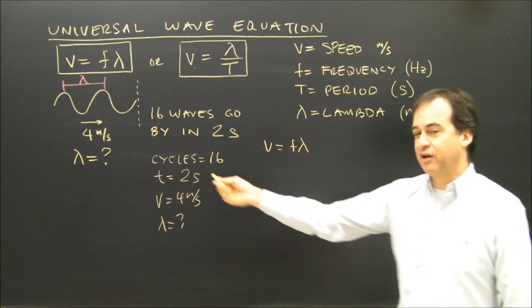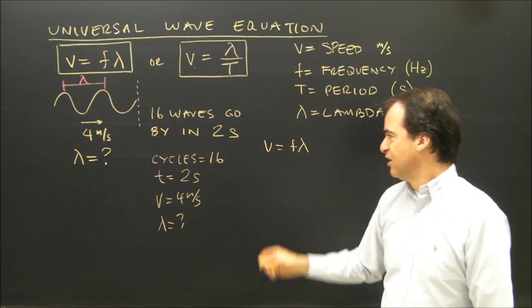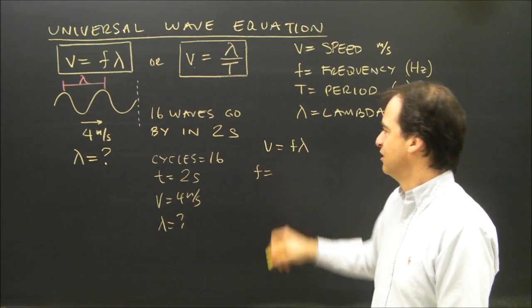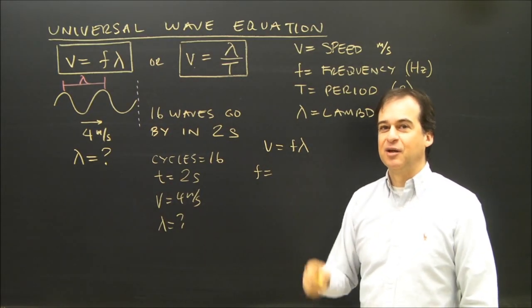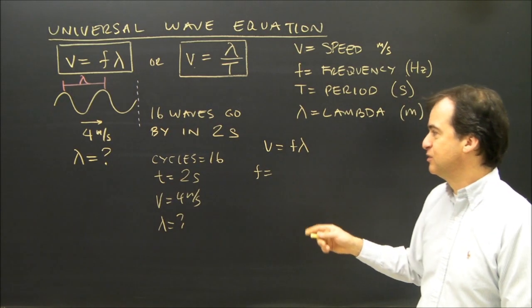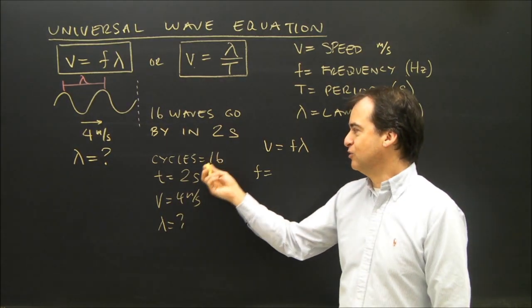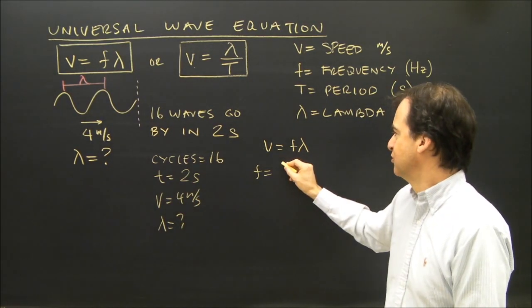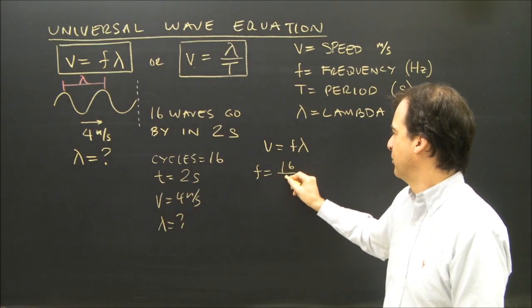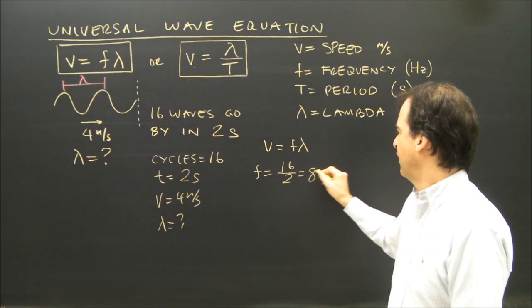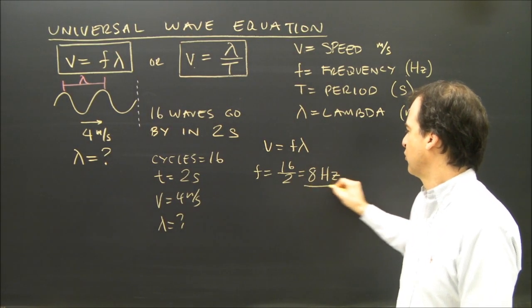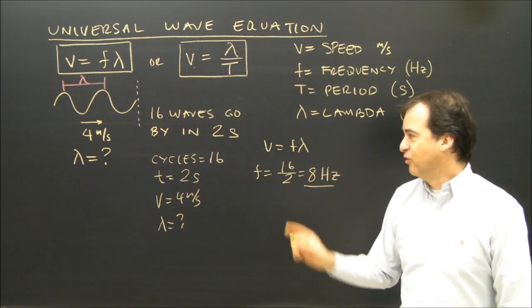So before I solve for lambda, I've got to solve for frequency. So frequency is in hertz. It's the number of cycles per second. So frequency is how many cycles divided by how many seconds. So it's going to be cycles divided by time. That gives me eight, and the units are hertz. So I now know the frequency.